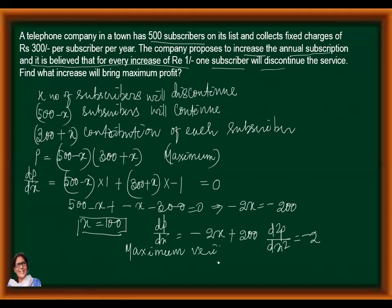But we have not got the answer. Find what increase will bring the profit. What will be the increase? The increase will be P is equal to 300 plus X. What is X? X is 100. Multiplied by 500 minus X, which is 100, so it will be 400. So it will be 400 multiplied by 400, which equals 160,000. This is the answer.